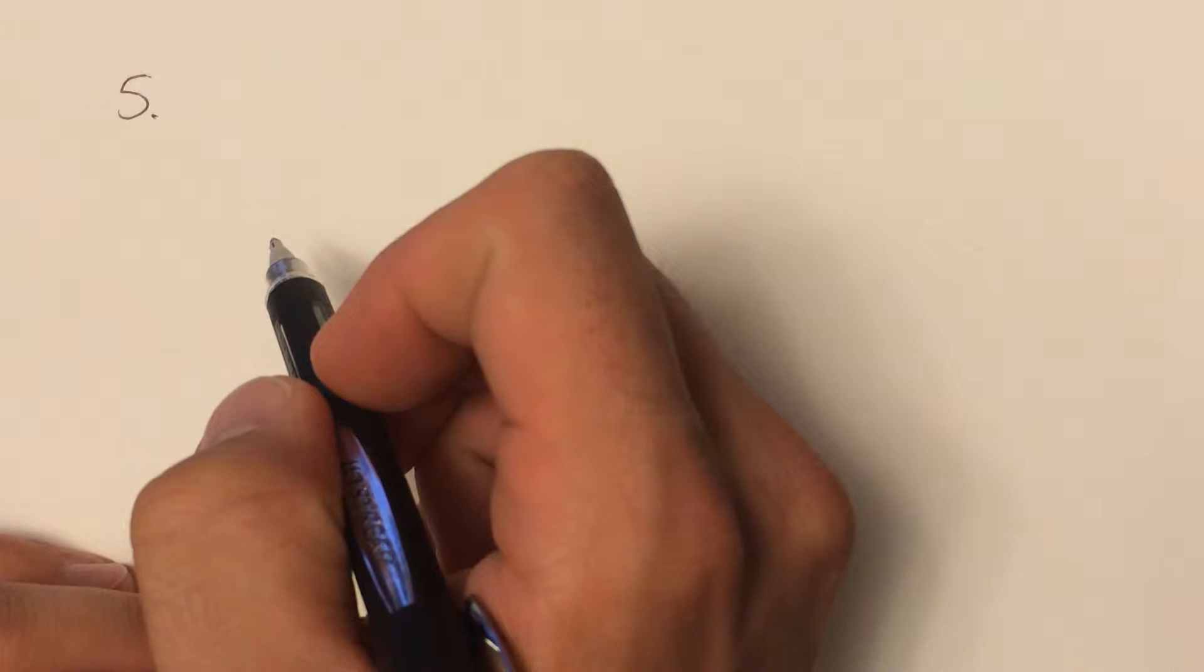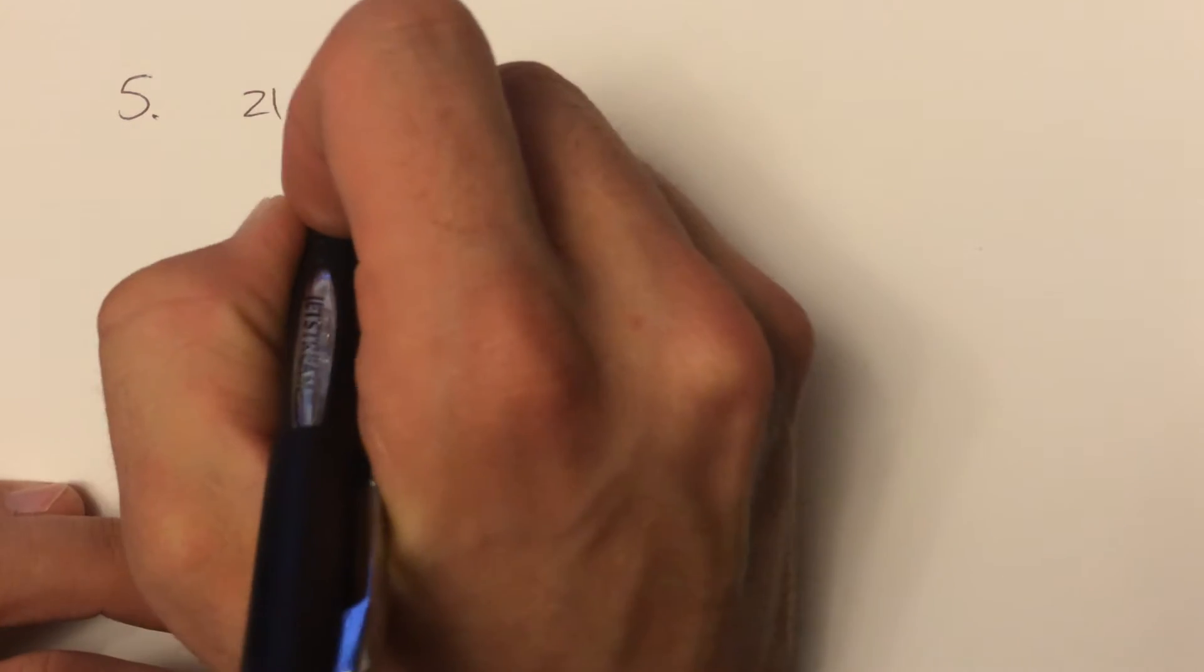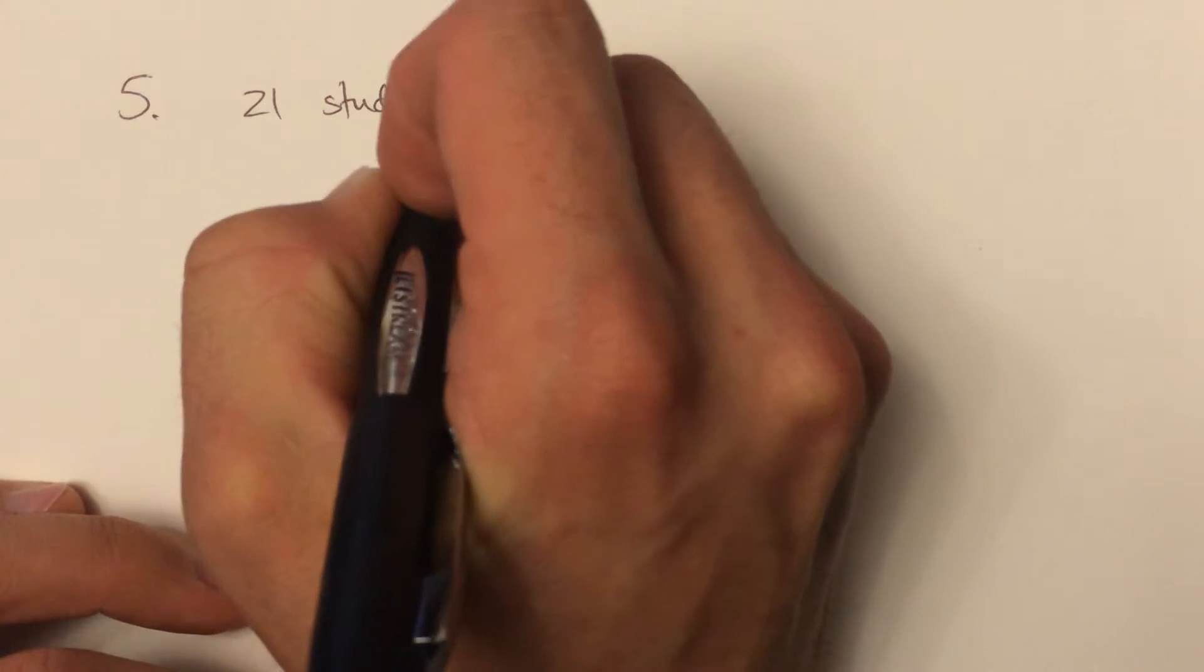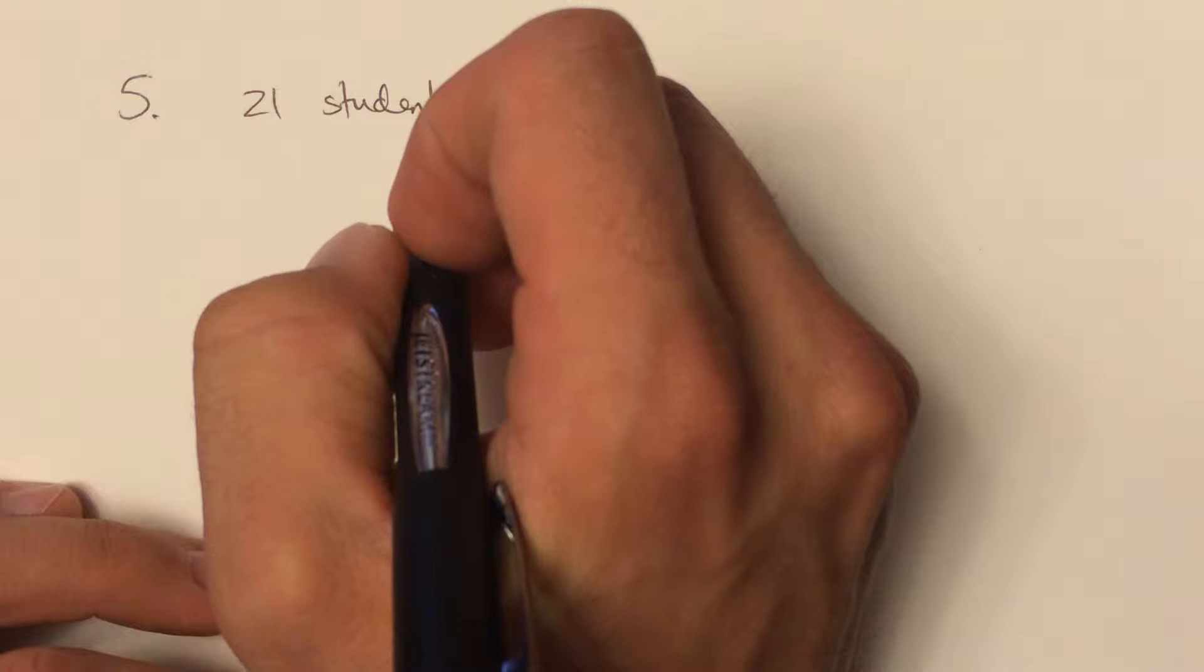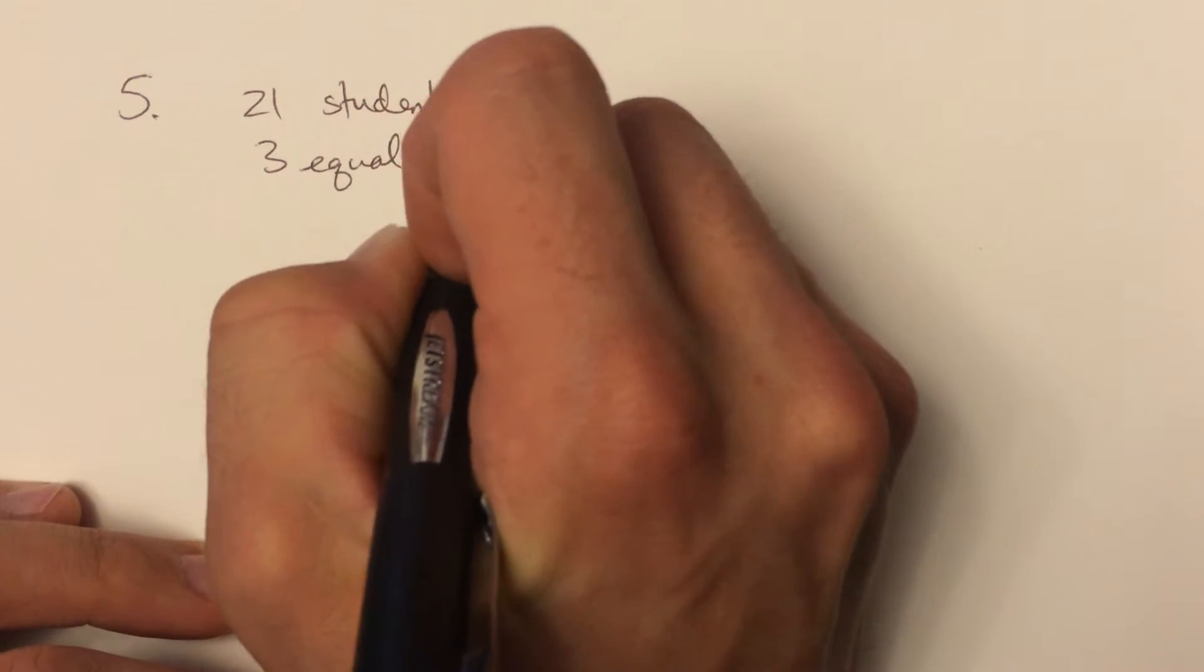Question five tripped up many of you. That question was you have 21 students lining up for a photo for a class picture in three equal rows. So three rows of seven.